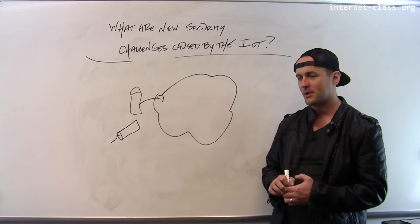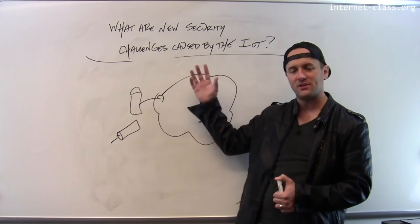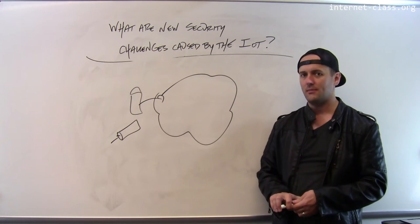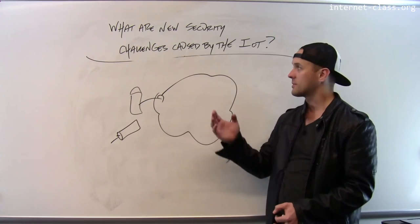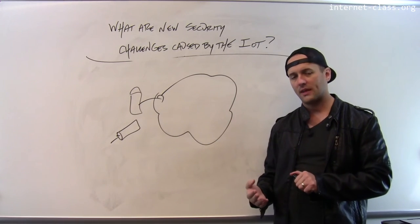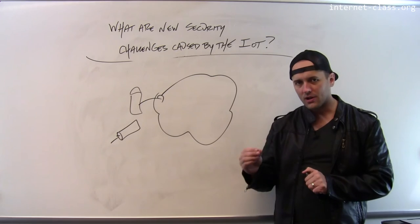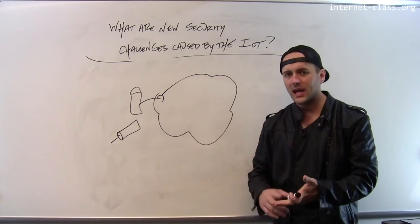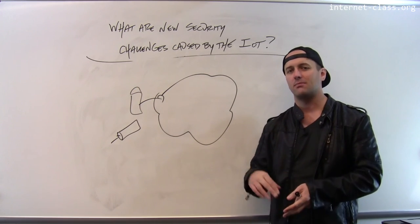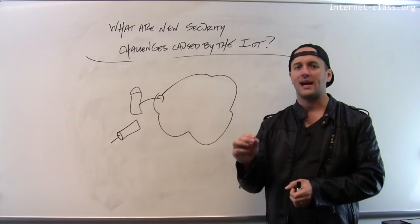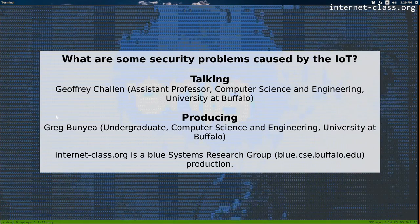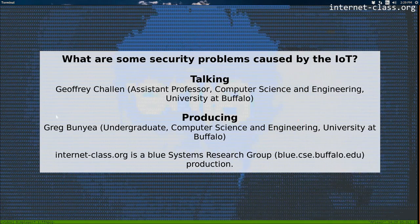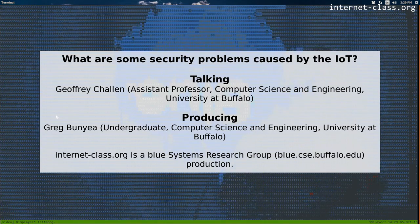When you think about the new types of devices we intend to connect in this vision of the Internet of Things, a lot of them are things that we don't necessarily want people to be able to hack into. There are some pretty important security challenges that we're going to have to solve before we can really feel comfortable with all of these new devices in the environment around us being connected to the Internet — able to share information, able to do cool things online, but also available for people to hack into.